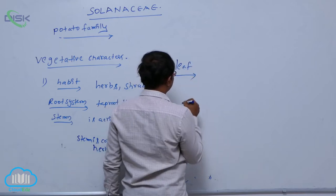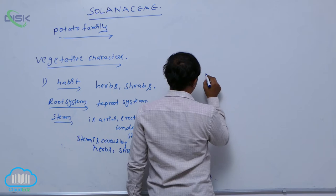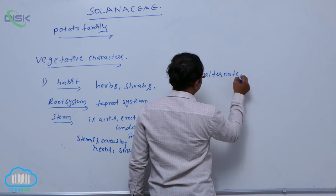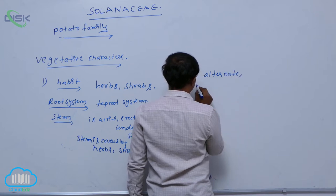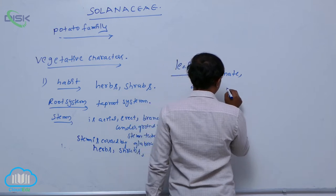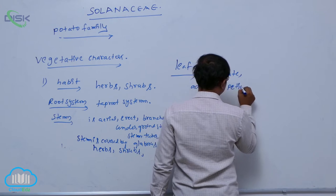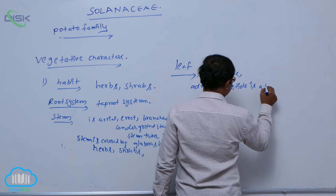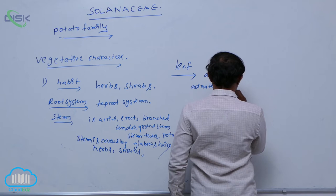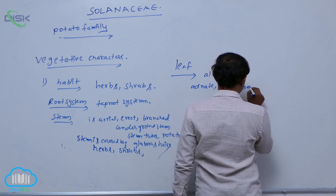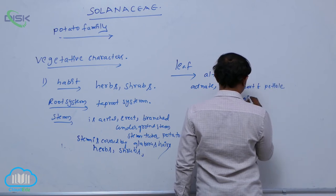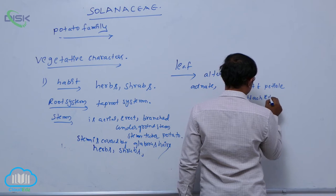In the leaf character, the arrangement is generally alternate and ornate. Ornate means that the petiole has some part of the petiole attached to the plant.